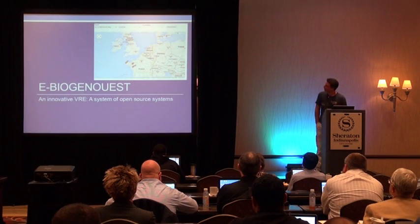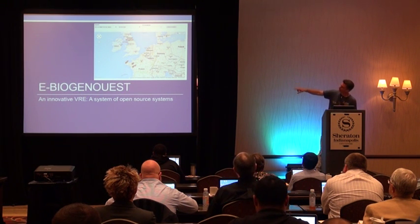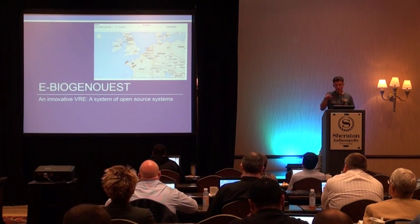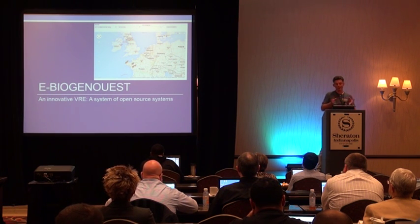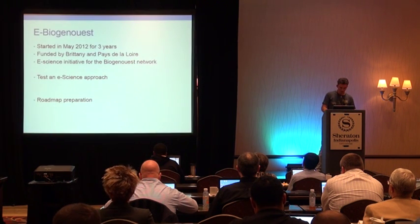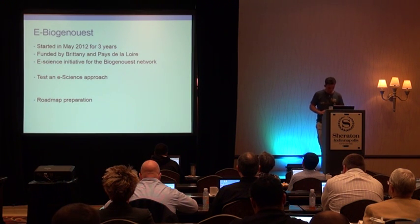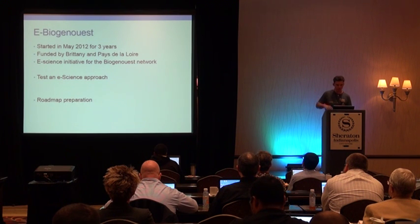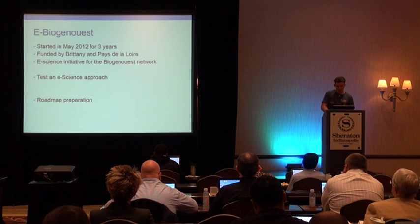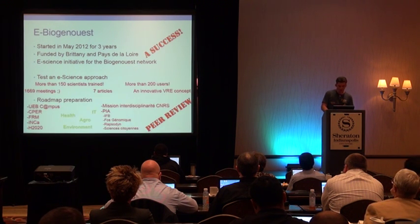The eBiogenwest project is located in Western France, where we have a big center with a lot of core facilities. eBiogenwest comes from the Biogenwest network, which is a gathering of 40 core facilities in genomics, proteomics, metabolomics, and other things around life sciences and biotechnology. We began in 2012, for three years, with funding from the two regions of Western France. We had two goals: first, to test an e-science approach based on the use of tools in the actual research environment, and second, to prepare for the structuration of e-science in Western France. It was quite a success.